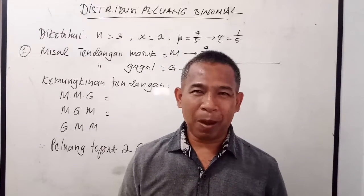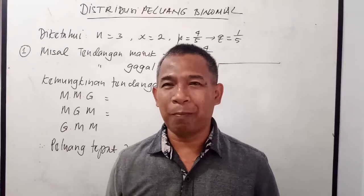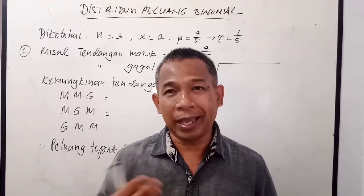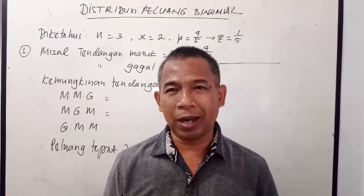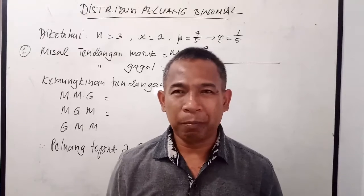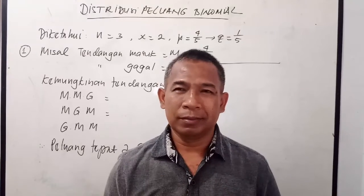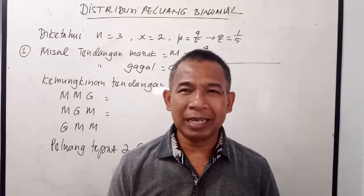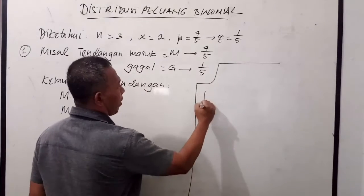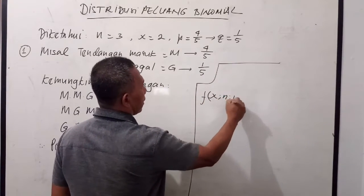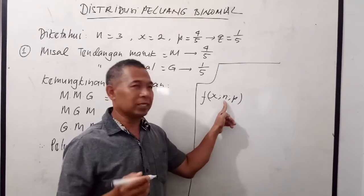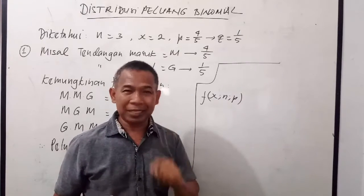Biasanya apabila kita melakukan N buah percobaan dan mengharapkan dari N itu adalah X percobaan yang sukses, maka peluang peubah acak binomial ini biasa dinyatakan dengan F(X, N, P). Ini adalah peluang peubah acak yang binomial, yaitu X yang diharapkan dari sejumlah N percobaan dengan peluang suksesnya adalah P.